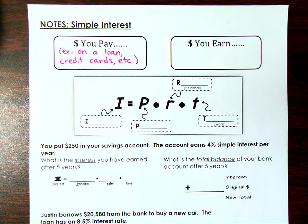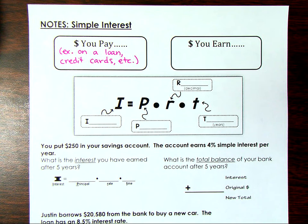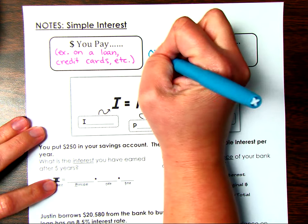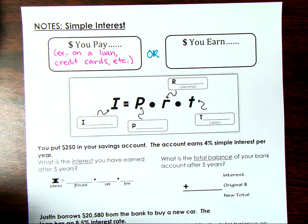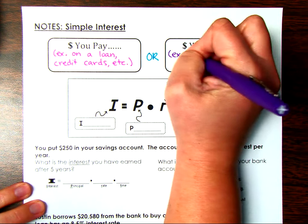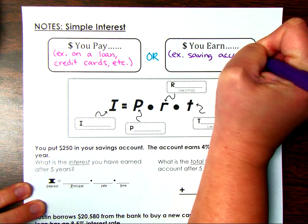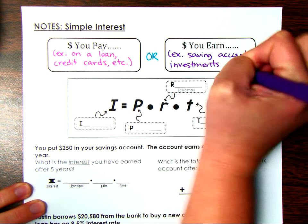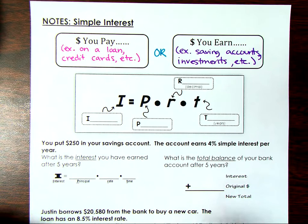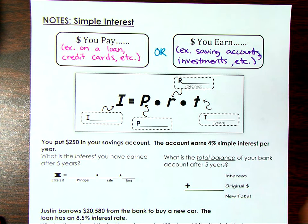They're lending you that money and you're going to have to pay them a little extra interest over time so they can make a profit. You're not just paying the twenty-five thousand dollars back — you're paying that plus extra interest. Interest can also be money that you earn, for example if you have a savings account or any investments. If you put money in a savings account with a three percent interest rate, you're being rewarded for keeping that money in a safe place and not using it.